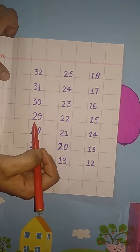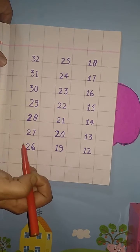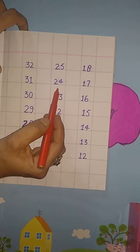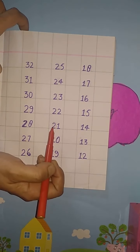Nice! Come on, read loudly. 29, 28, 27, 26, 25, 24, 23, 22, 21. Excellent!